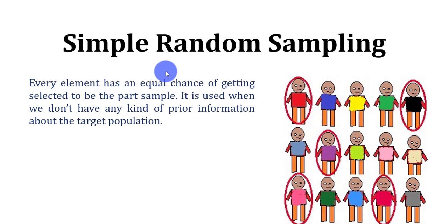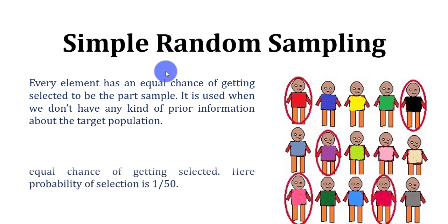You can see another example here: in a class of 50 students, you have selected 20 students randomly. All 50 students have equal chances of being used as a sample, but we have selected only 20 students. So the 20 is our sample.